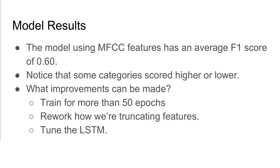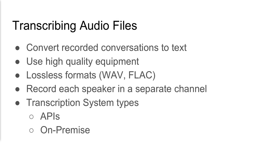Model results were 0.6, with some categories higher or lower. Potential improvements include: training for more than 50 epochs, getting more data for underperforming categories, manually verifying more data, reworking the truncation window size to be wider, tuning the LSTM hyperparameters, adding another layer, or trying other model architectures entirely. That's the overview on working with audio features for classification.